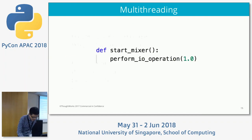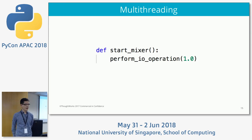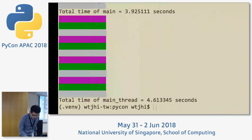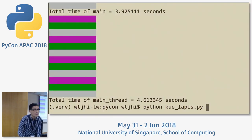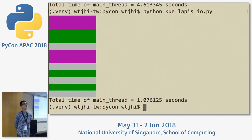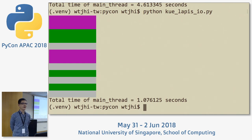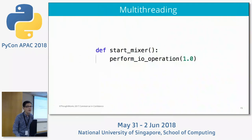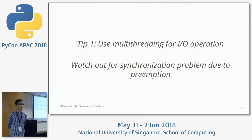I'm going to change the mixer to perform IO operations instead — inside this IO operation it's just time.sleep, a simulation of an IO operation. As you can see we achieve parallelism in this case because it's an IO operation, but you can also see the synchronization problem with incorrect layering. So Tip 1: use multi-threading for IO operations, but watch out for synchronization problems due to preemption.